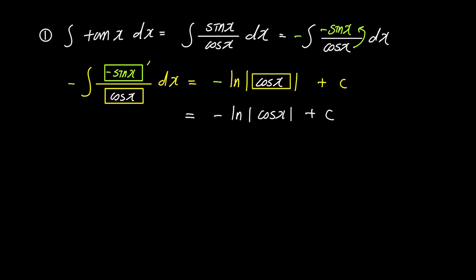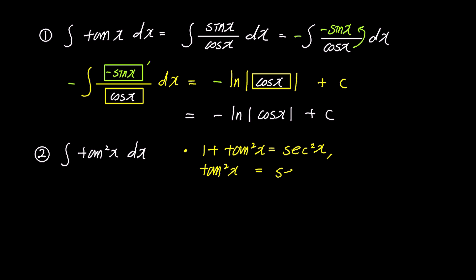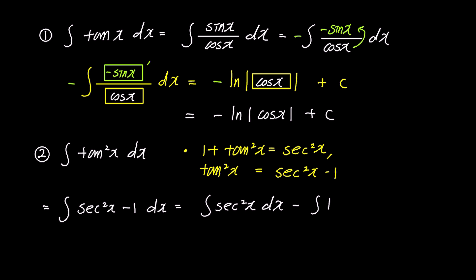The second problem is the integral of tan²x. We use the identity 1 + tan²x = sec²x. Rearranging for tan²x gives sec²x - 1. Substituting into the expression, we have the integral of (sec²x - 1) dx, which expands to the integral of sec²x dx minus the integral of 1 dx. The answer is tan x - x + c, since the integral of sec²x is tan x.